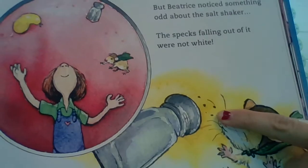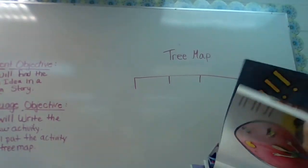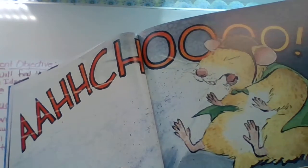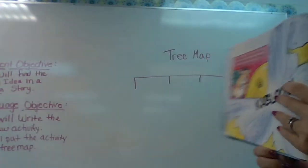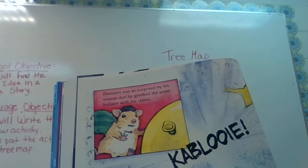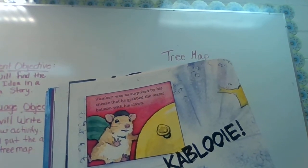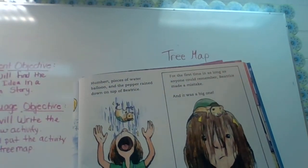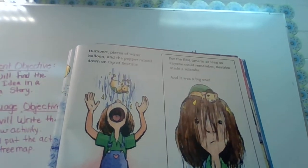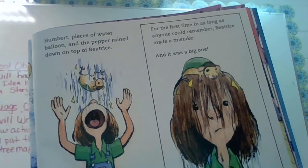Look at what color they are — they're black. So that wouldn't be salt. What would it be? Humbert was so surprised by his sneeze that he grabbed the water balloon with his claws. KABLOOM! Humbert, pieces of water balloon, and pepper rained down on Beatrice. Did you guess pepper? For the first time as long as anyone could remember, Beatrice made a mistake. And it was a big one.